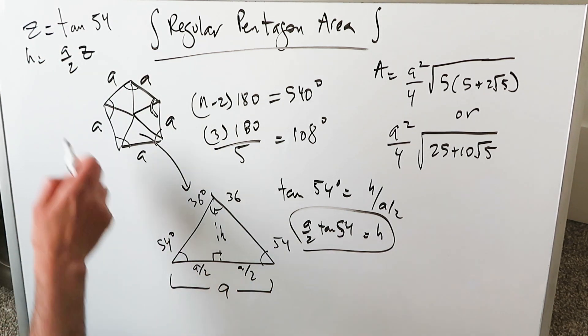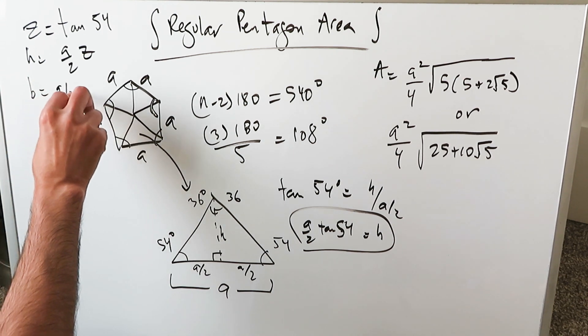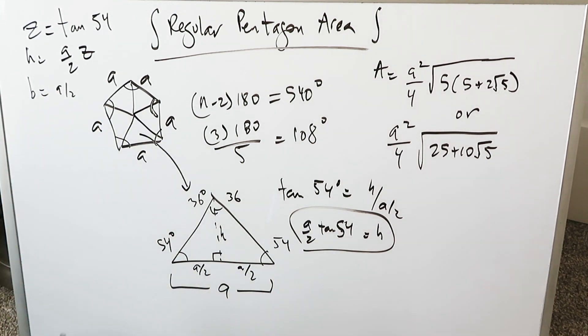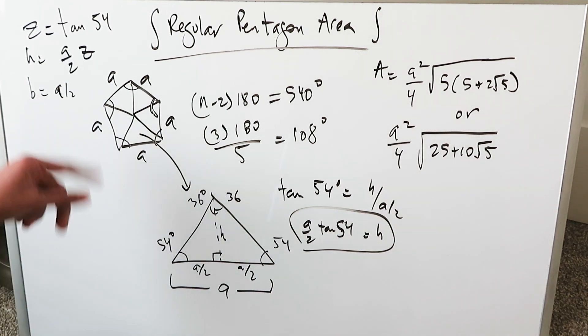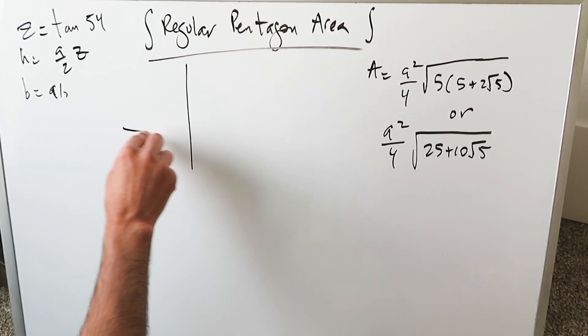We know we have a base over here. Base is equal to A over 2, not A. A over 2, because when I'm going to plot this out on an X and Y axis, A over 2 is what we are going to use. So keep in mind we have a substitution in play. Tan 54 is equal to Z. We have here this.